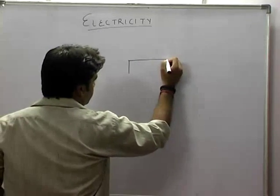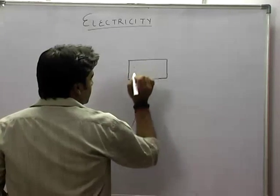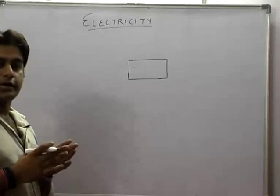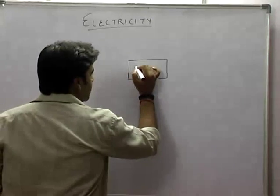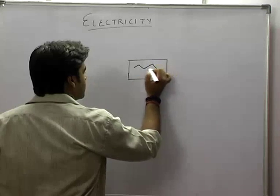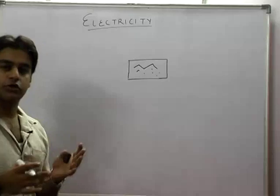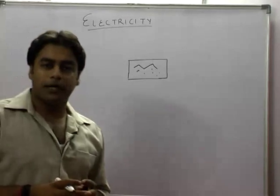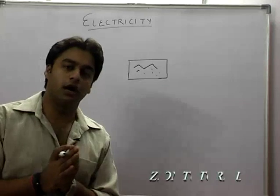When we have a conductor and don't apply an electric field, what is the case? We know that electrons are moving, but the net velocity or vector sum of velocities is zero.